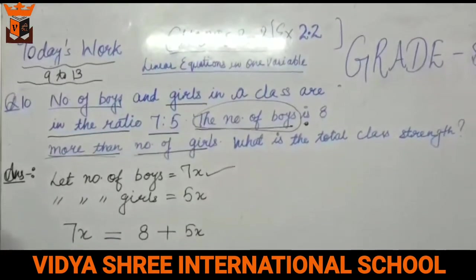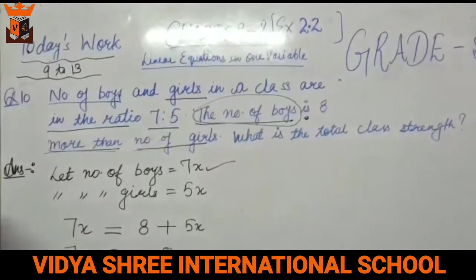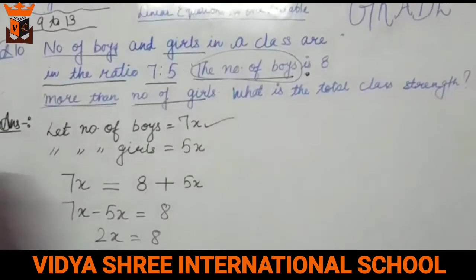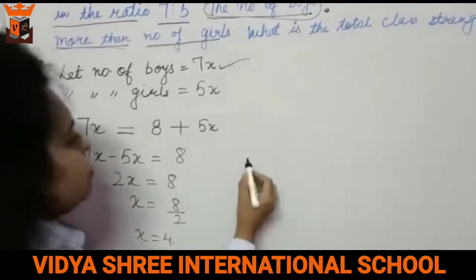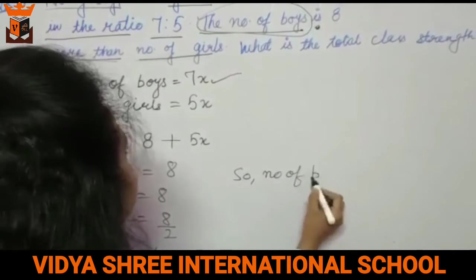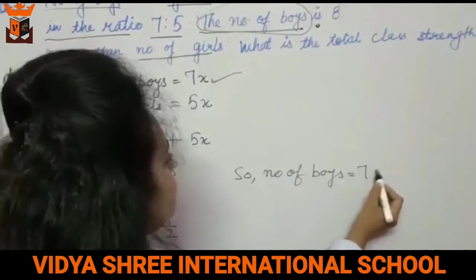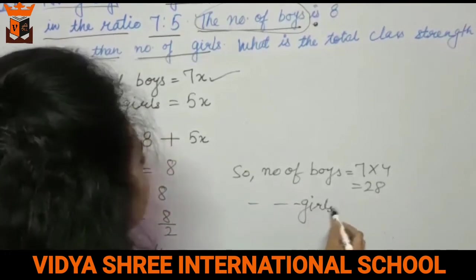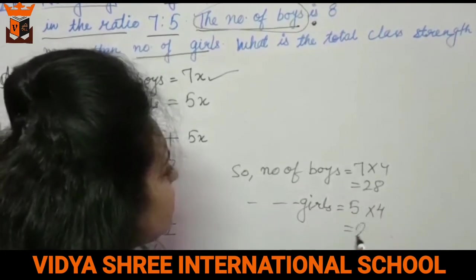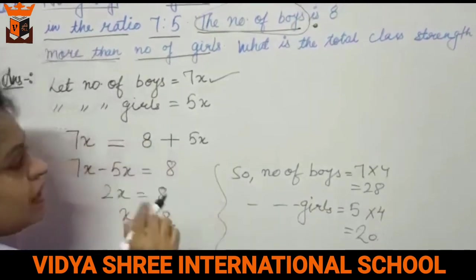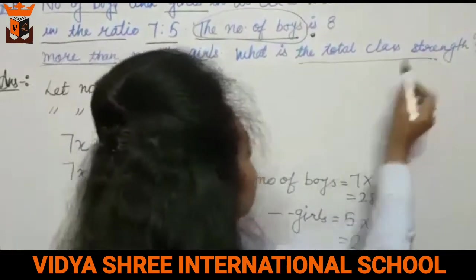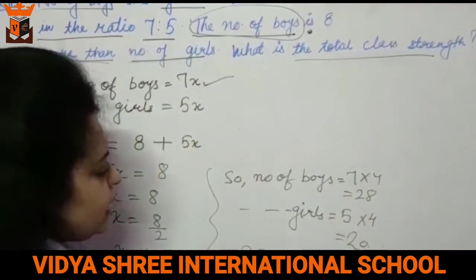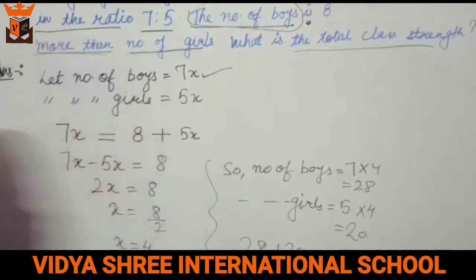Solving: 7x minus 5x equals 8, so 2x equals 8, so x equals 8 divided by 2, which gives x equals 4. Therefore number of boys is 7 into 4 equals 28, and number of girls is 5 into 4 equals 20. But the question asks for total class strength, so boys plus girls equals 28 plus 20, which gives 48.